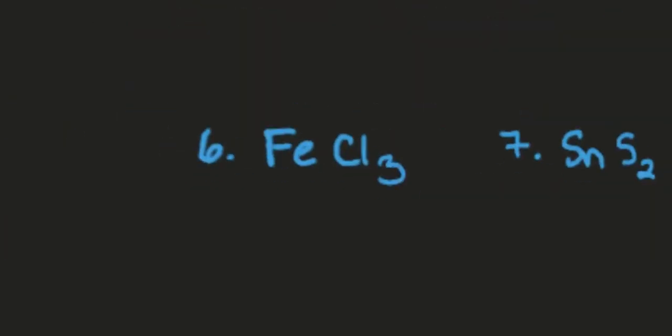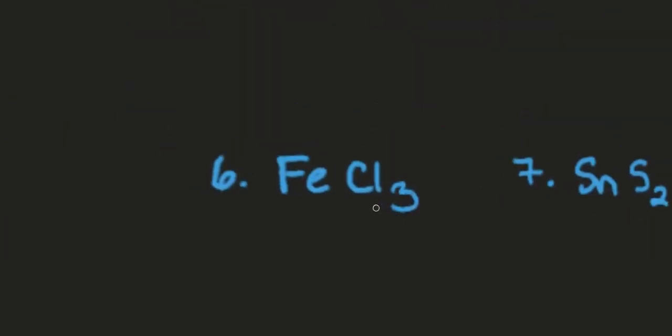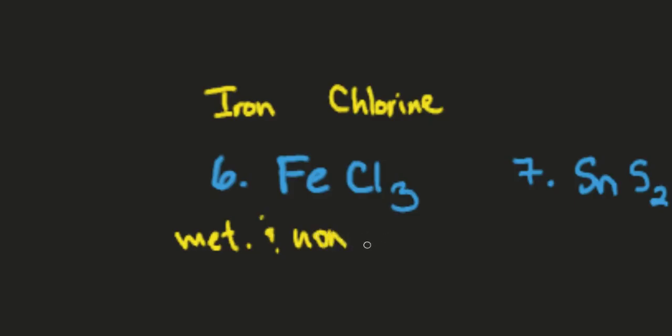So the first one we're going to look at is iron here and has chlorine here. So this is a metal and a nonmetal. So we know that metal and nonmetal is ionic in nature.